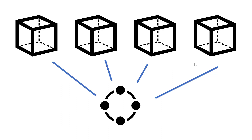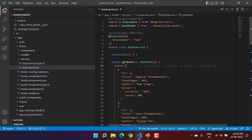Now, what happens if the value is 'any'? There are two possibilities. The first is that we are not using lazy loading — meaning all modules are loaded eagerly. In that case, there is no difference between 'root' and 'any': there will still be only one single instance of the service. You will notice the change only when your application uses lazy loading — each lazy-loaded module will then have a separate instance of the service.